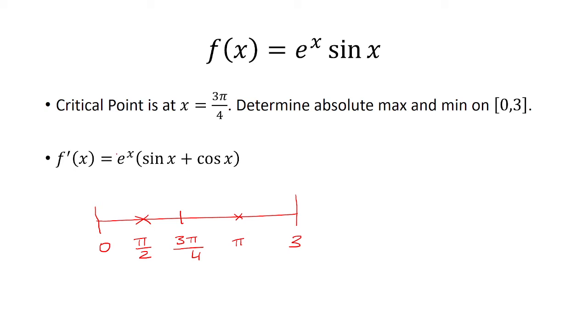We know e to the x is always positive, so I don't really care about that. Now, pi over 2, sine of pi over 2, that's 1. That's positive. Cosine of pi over 2 is 0. So positive times a positive gives us a positive.